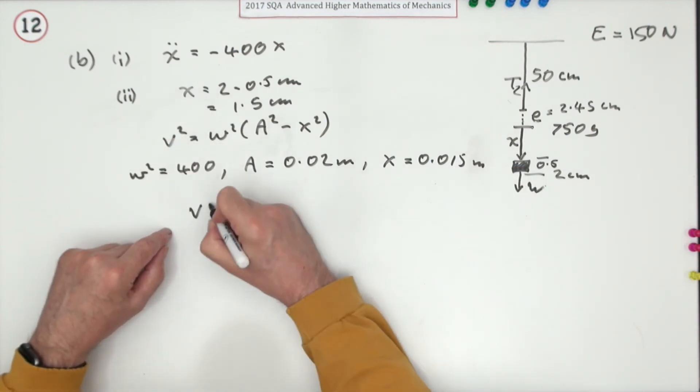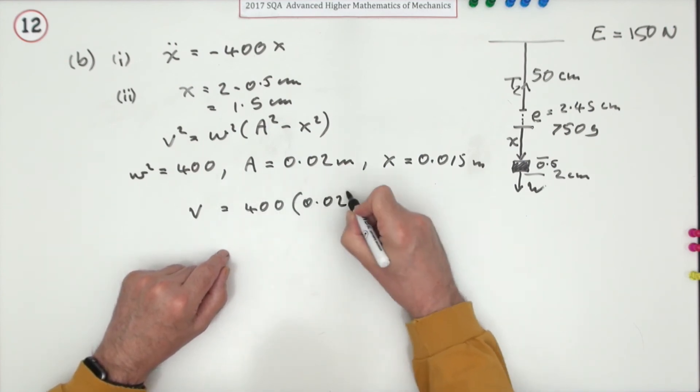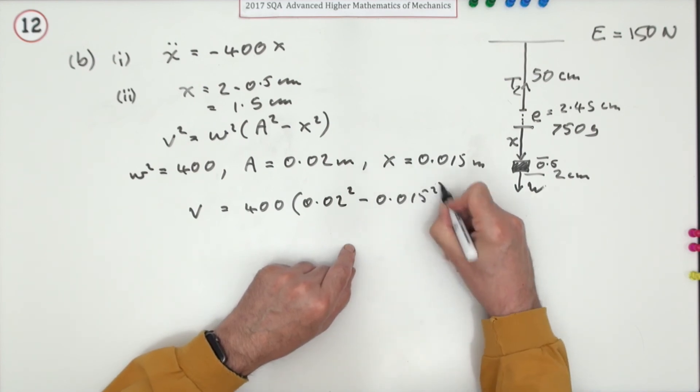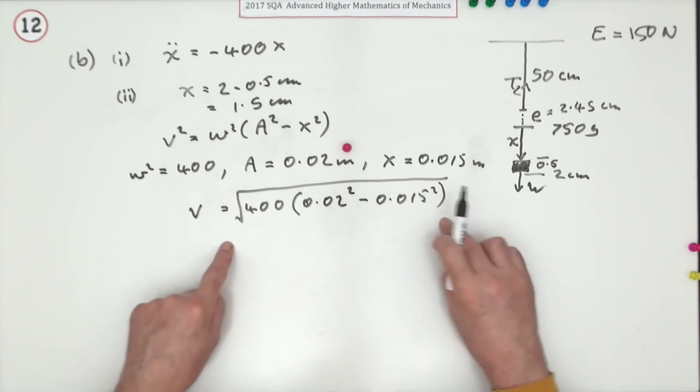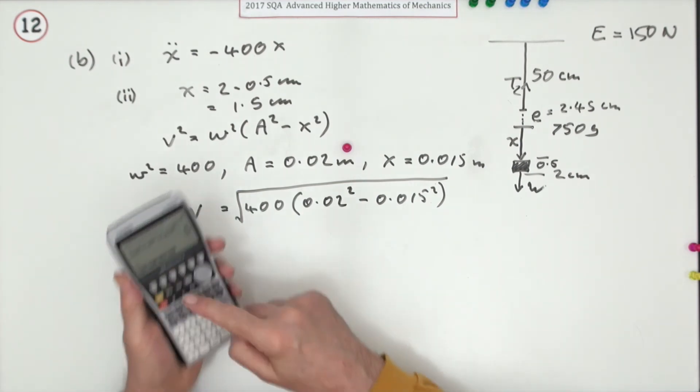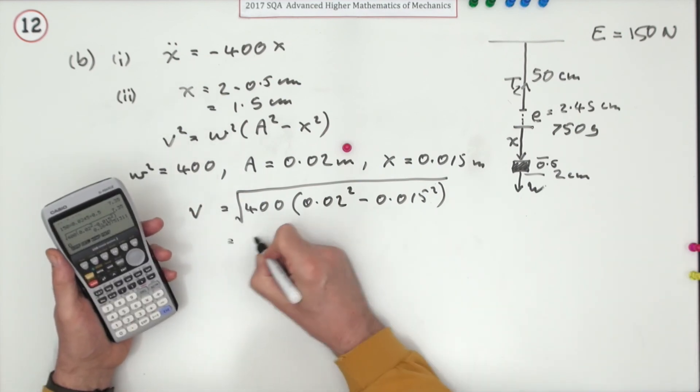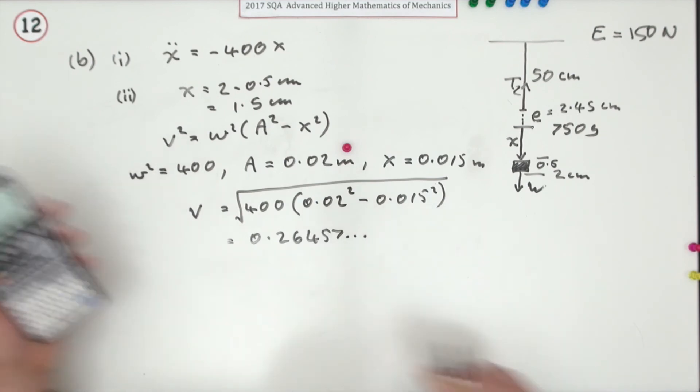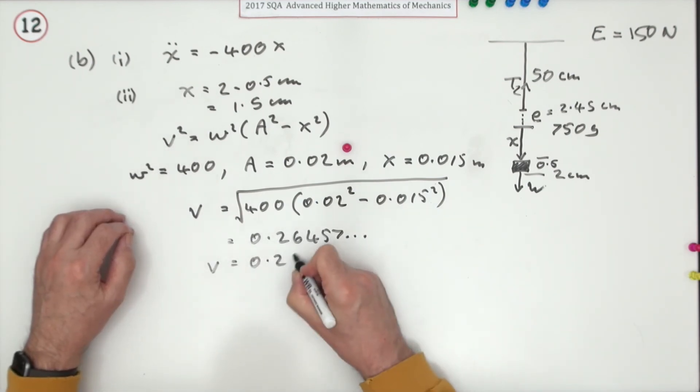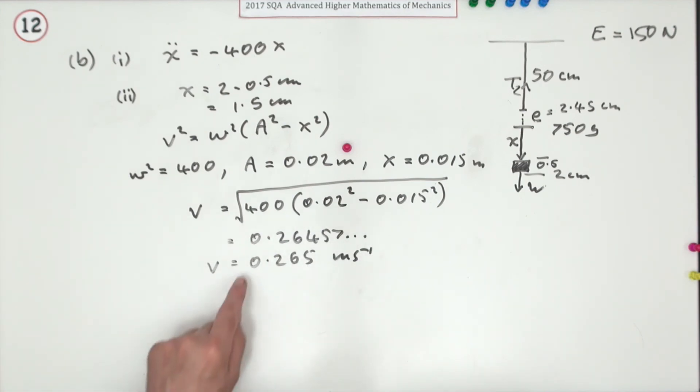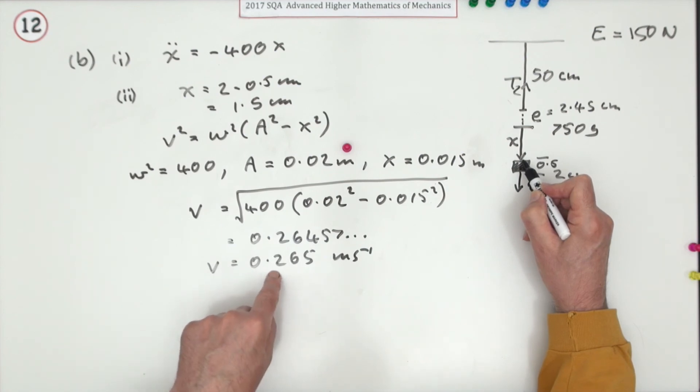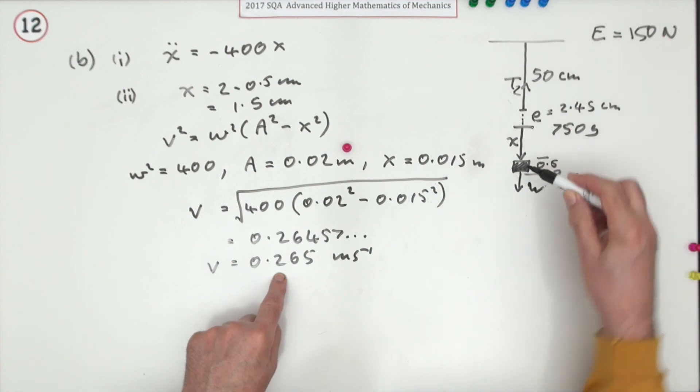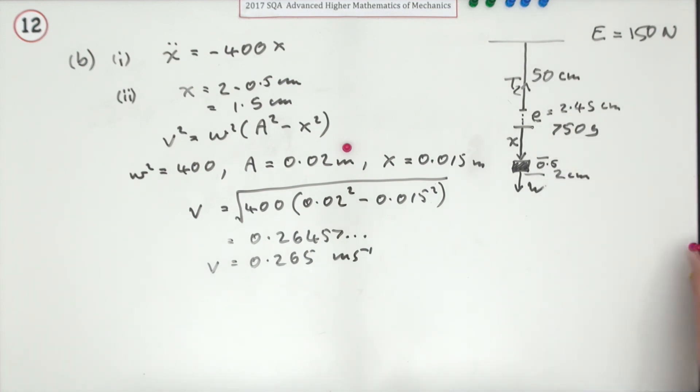So v squared is going to be 400 times 0.02 squared minus 0.015 squared, then just do the square root. There'll be one mark for getting as far as this using the appropriate formula. When you press the buttons you get 0.26457 and so on, so I'll round that off to 0.265 meters per second. It could be plus or minus depending on which way it's going. It'll be going at this speed upwards just after release, but on the way back down at that point it'll be going at that speed downwards, so that's why you can't really put a sign in. And there's the last mark.